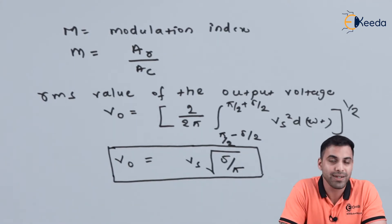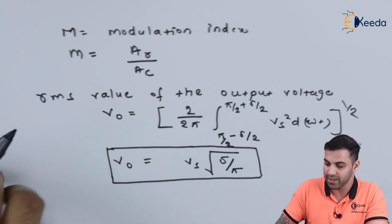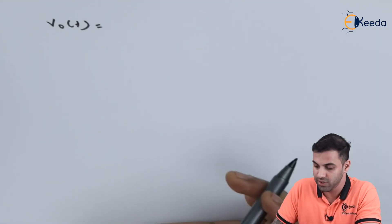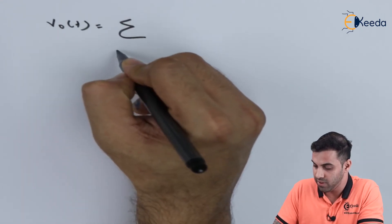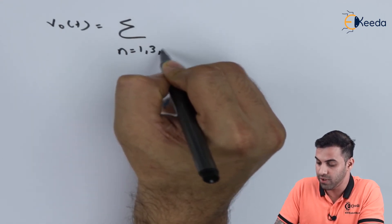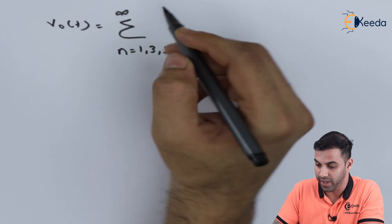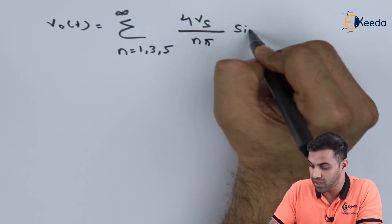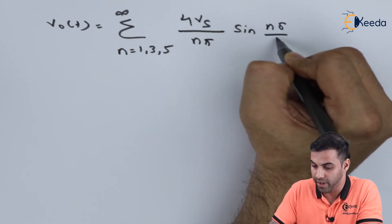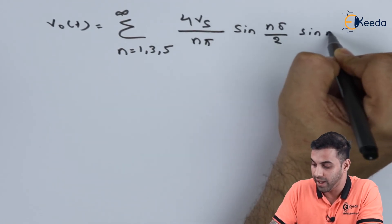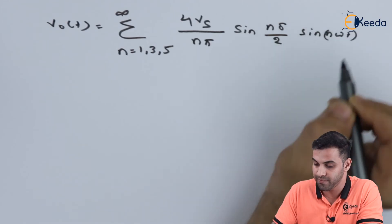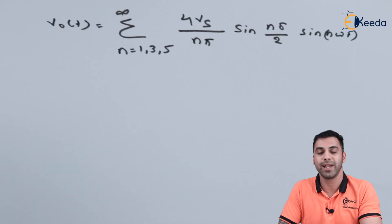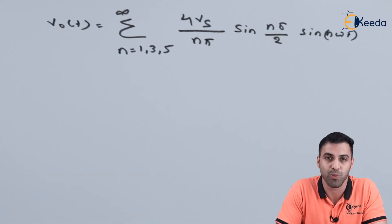If we calculate the instantaneous value of the output voltage, let V_0(t) be the instantaneous value of the output voltage, which equals the summation for N = 1, 3, 5 (all odd harmonics) to infinity of [4Vs divided by N*pi] times sine(N*delta/2) times sine(N*omega*t). This is the instantaneous value of the output voltage, and we already calculated the RMS value of the output voltage.